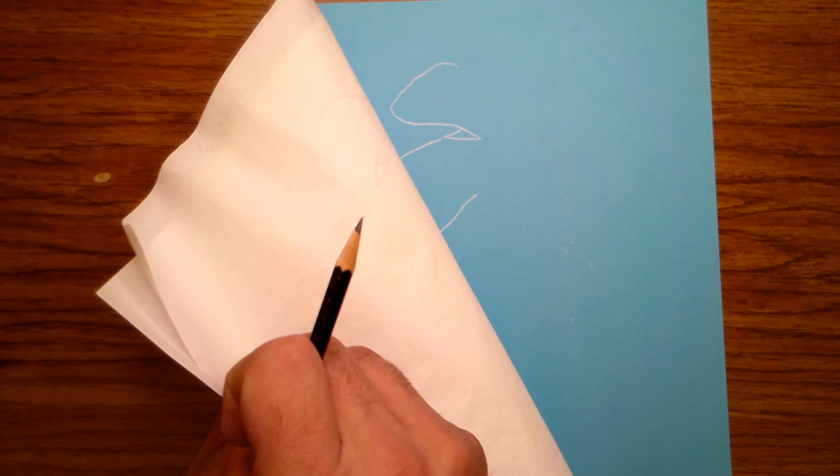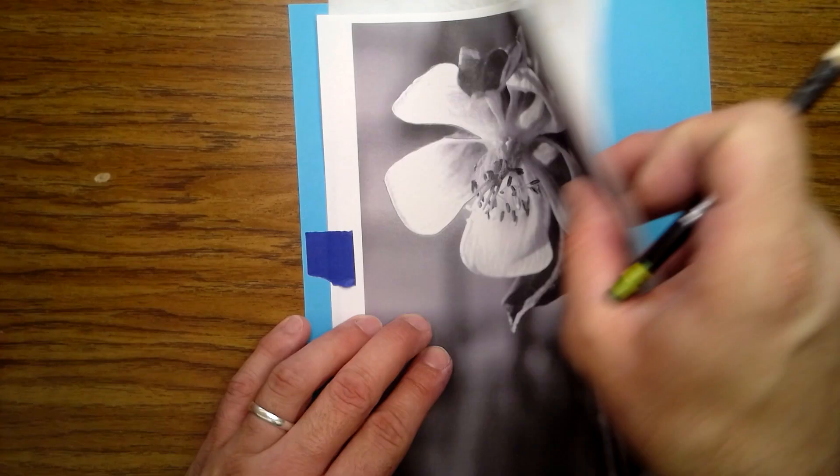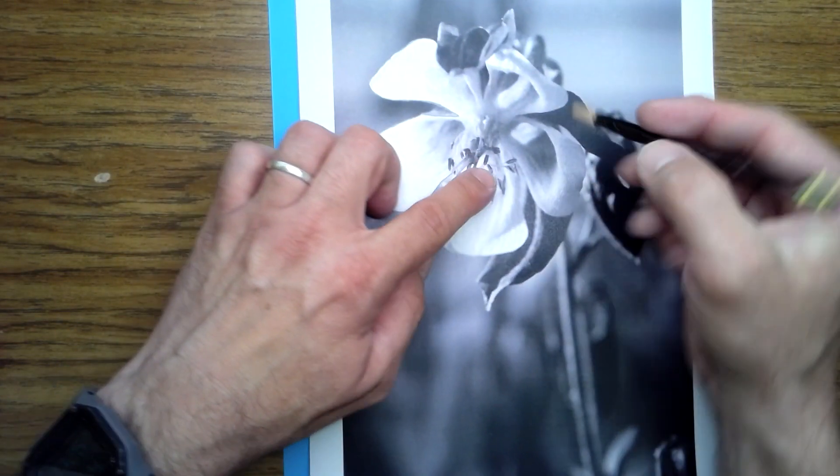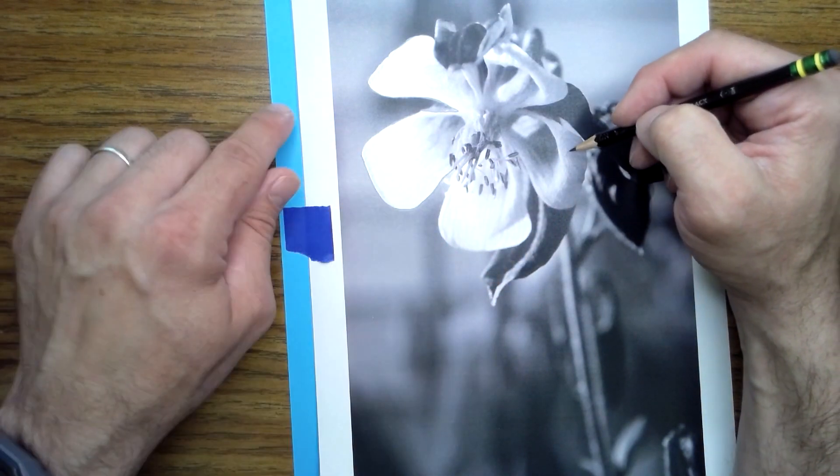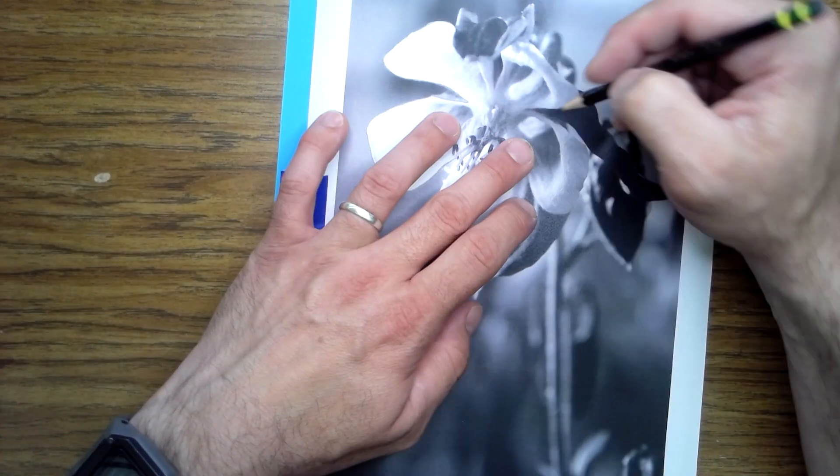All right, we continue that process. But again, any of the areas with these grays, they're going to be done with the graphite onto this blue paper. So I definitely want to trace the edges of separation on major shapes.